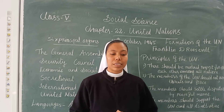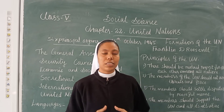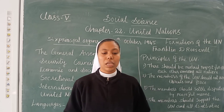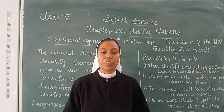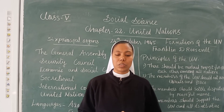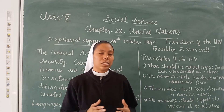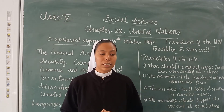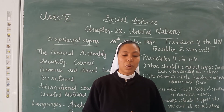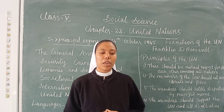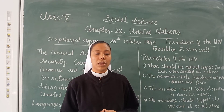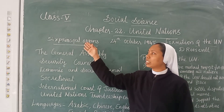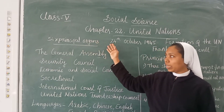The sixth and final organ is the Trusteeship Council, which was established to look into the transition of colonies to independence. This council is now dissolved. These are the six principal organs of the UN.